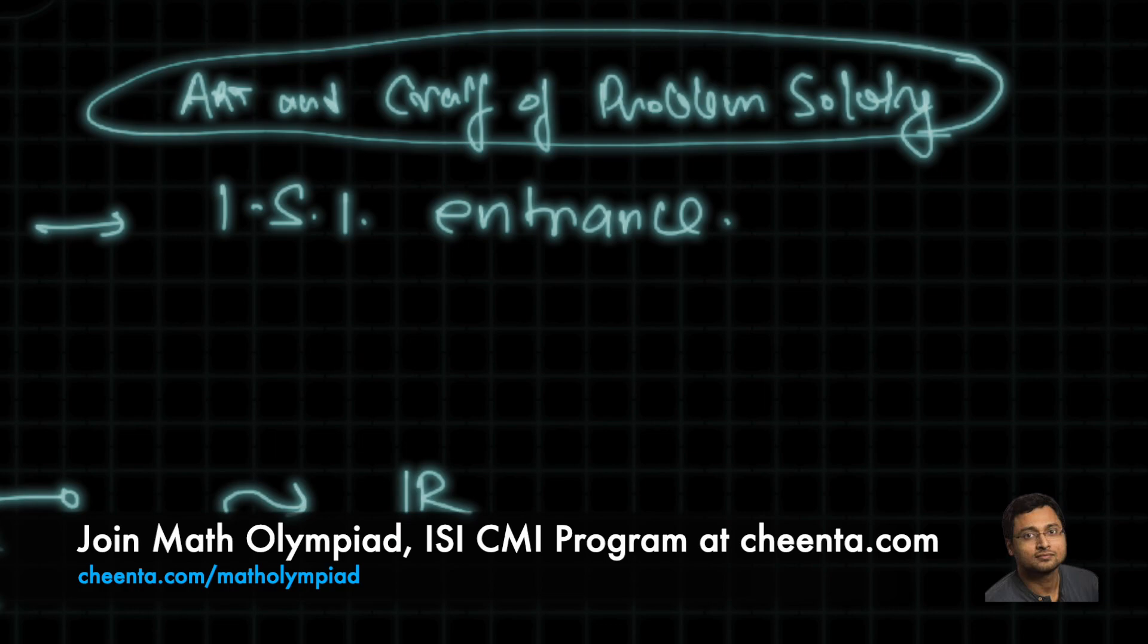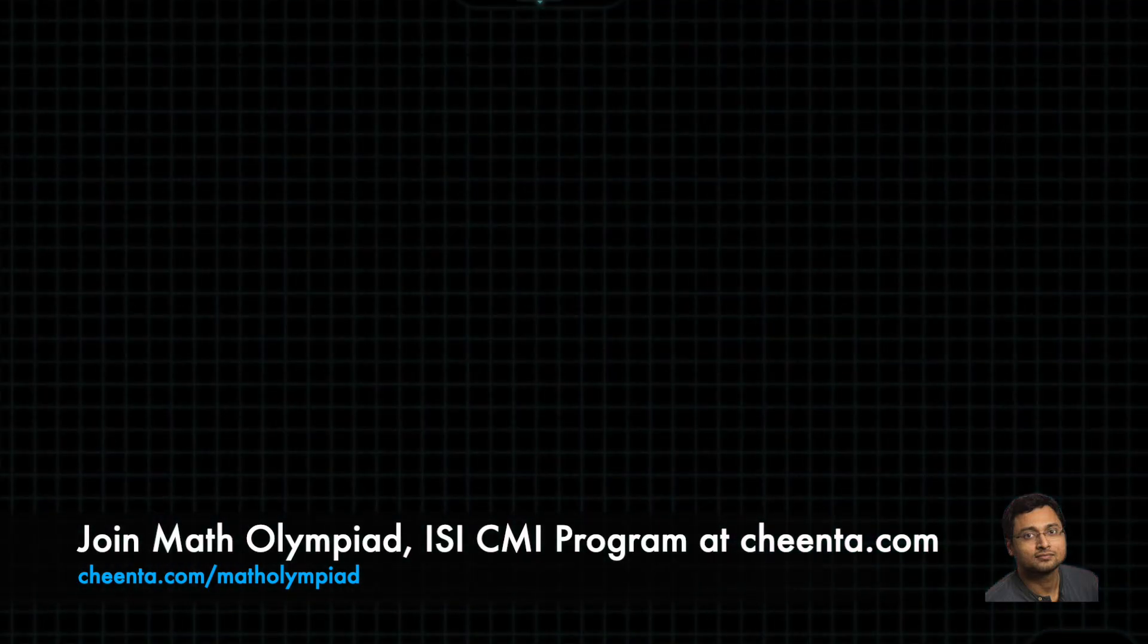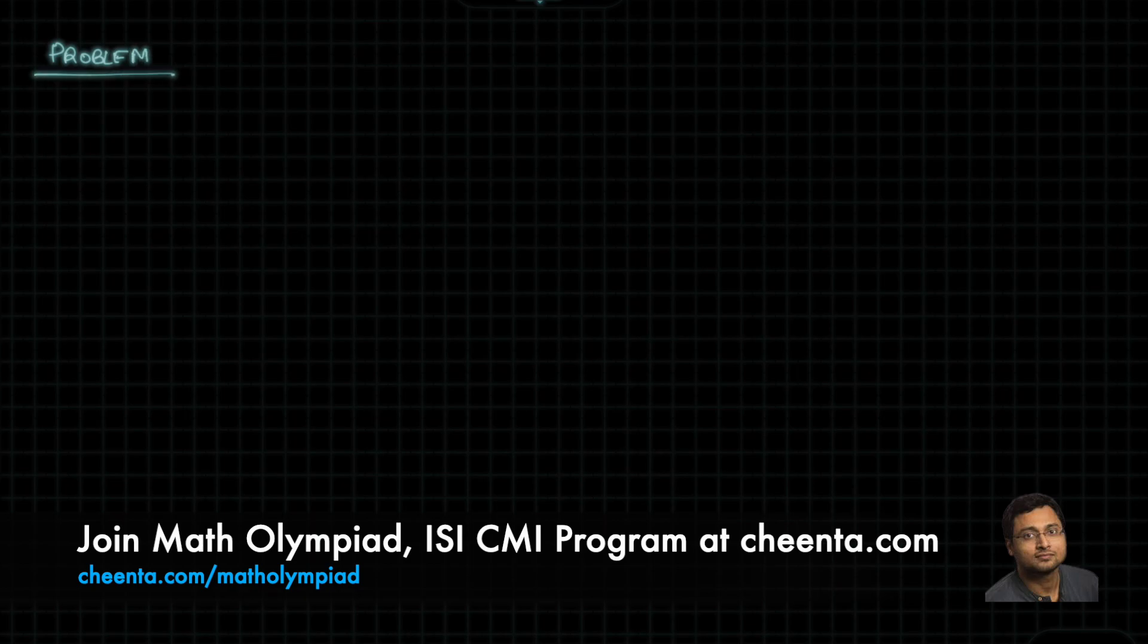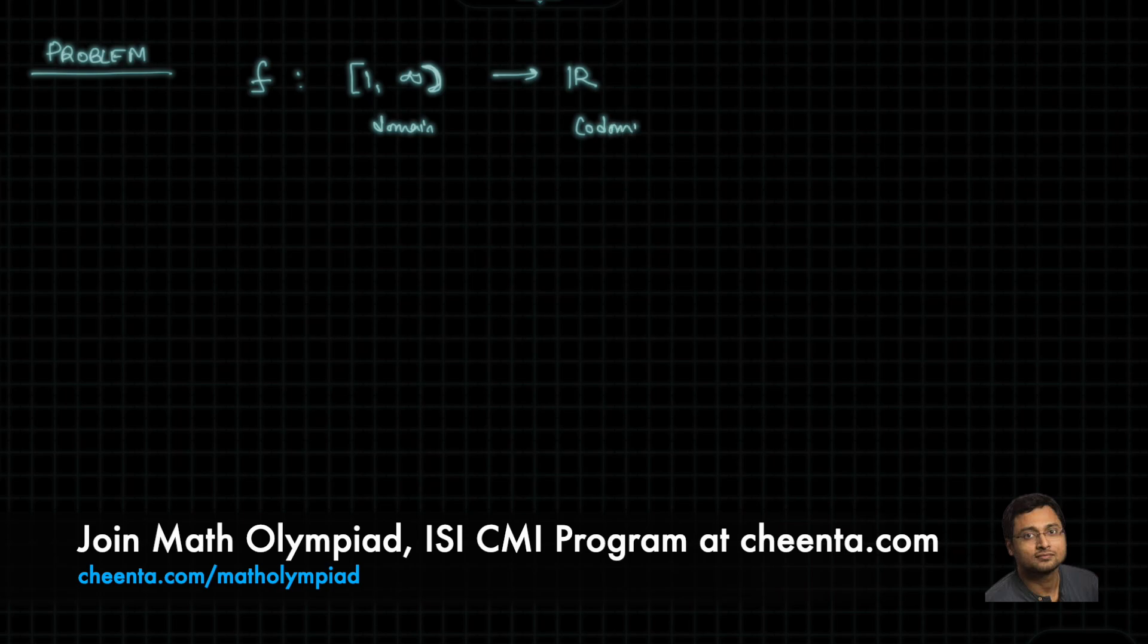So, we will be applying the fundamental theorem of calculus in a problem from ISI entrance and see it in action. So, here is the statement of the problem. It says that f is a function defined from 1 to infinity to real numbers. So, this is the domain, all the positive numbers from 1 to infinity, and this is the co-domain, the output values are real numbers.